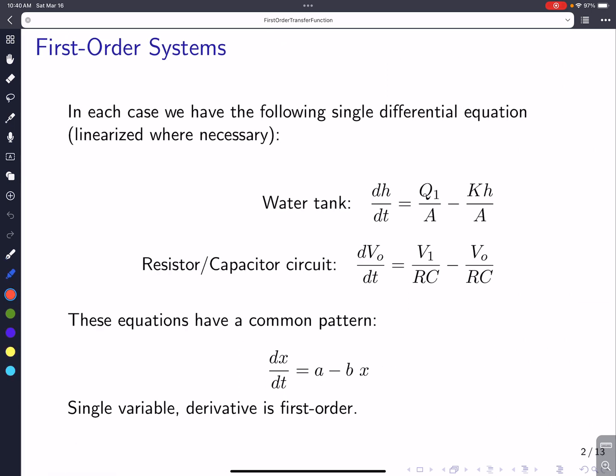So let's just have a look at the equations we derived in the previous two videos. One was for the water tank and the other was for the resistor capacitor circuit. If you look at these carefully, you'll see there is a pattern. The pattern is we have a variable derivative, we have a constant, and then the variable also multiplied by a constant. So it's a single variable and the derivative is first-order. This is a first-order system.